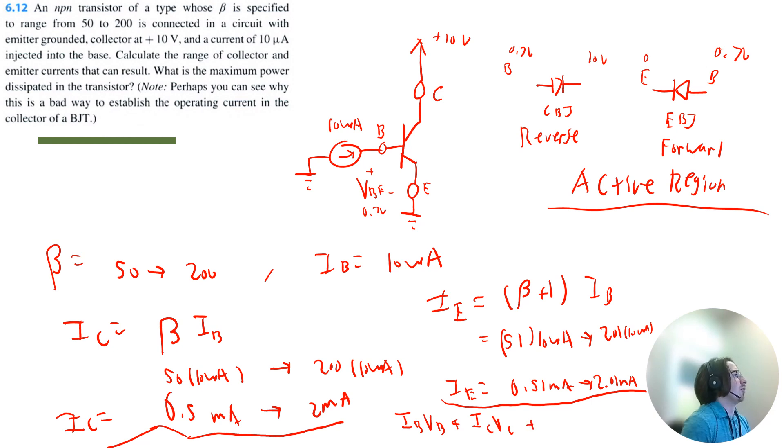We would technically also add current at the emitter times voltage at the emitter, but the voltage of the emitter is zero, so we're not concerned with that.